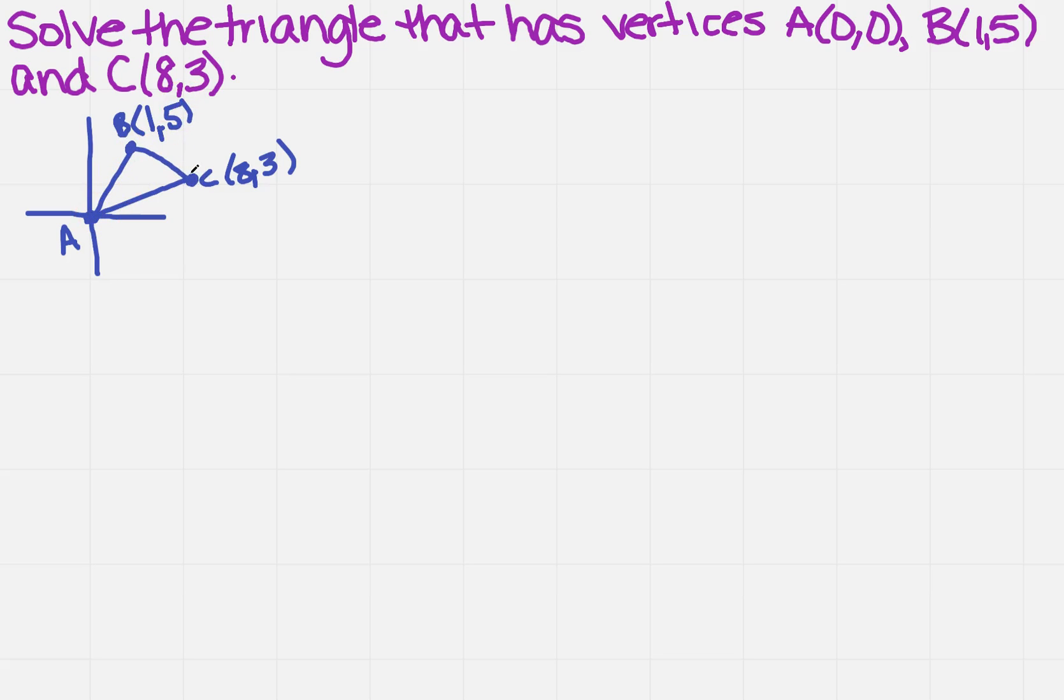Now, what can I do from that? Well, I need to know the sides. So in order to find the length of the side, I'm going to have to use the distance formula. And if you recall, the distance formula says that you take the square root of x2 minus x1 squared plus y2 minus y1 squared.